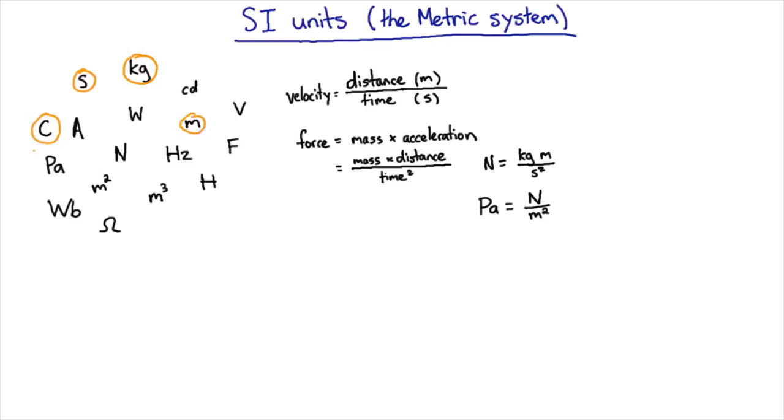So there's this stuff called mass. There's this stuff called charge. Coulomb is a unit of charge. There's this stuff called distance and stuff called time. And out of those four, you can build nearly all the others.